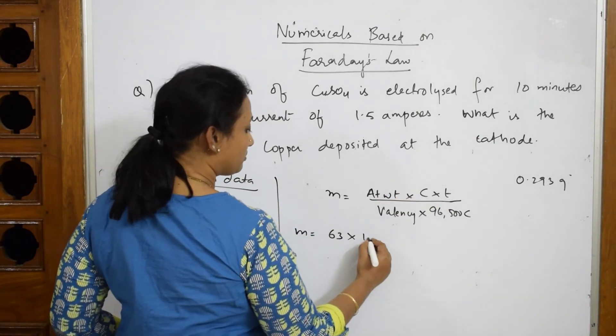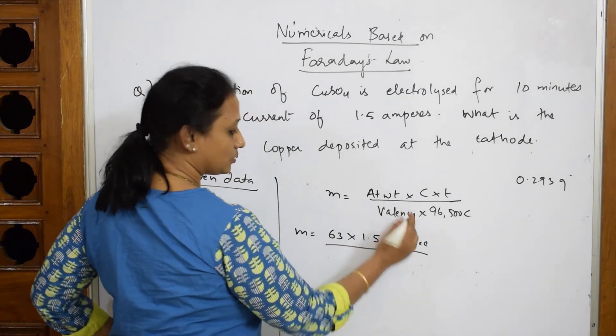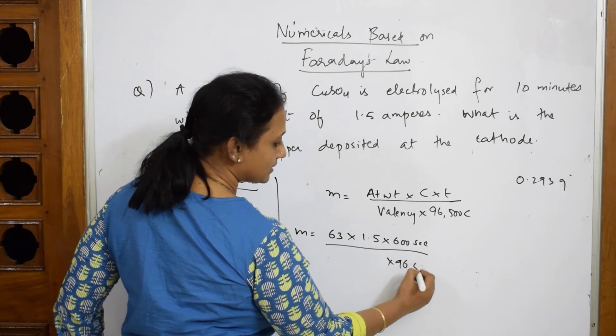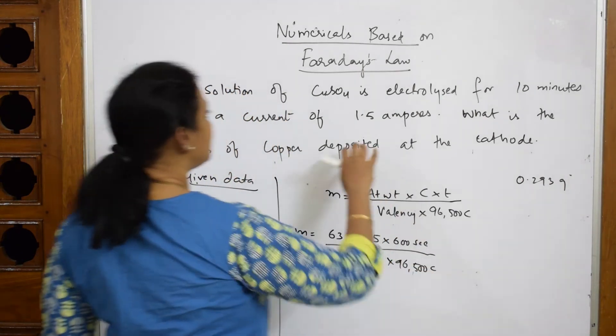Directly, you can also apply 1.5 into 600 seconds divided by, 96,500 is like that only. Now, what is valency? Yes, now, I have to see how many are exchanged.